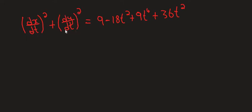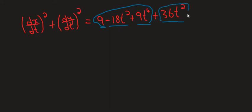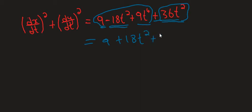Now we combine (dx/dt) squared plus (dy/dt) squared and place them together. We have: 9 minus 18t squared plus 9t to the power of 4, and then we add 36t squared. Combining like terms — minus 18t squared plus 36t squared gives plus 18t squared — so we get: 9 plus 18t squared plus 9t to the power of 4.